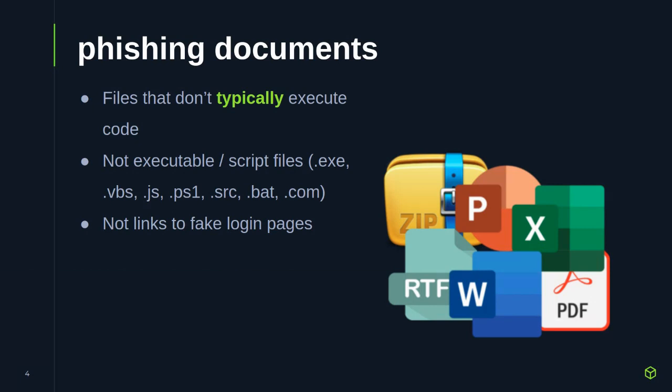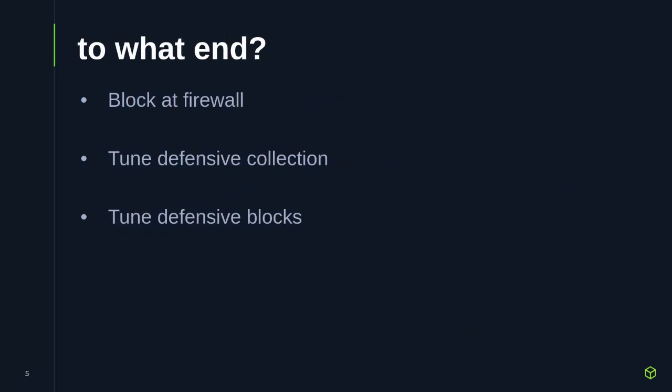Why do we want to look at phishing documents? At the most tactical level, if your company is getting sent a wave of phishing emails right now, and you can pull out the IP addresses or domains they're connecting to, you can put blocks in place at the firewall. That's not a hugely scalable thing — it's kind of a game of whack-a-mole — but if it's happening to you right now, it's certainly something you can put in place.